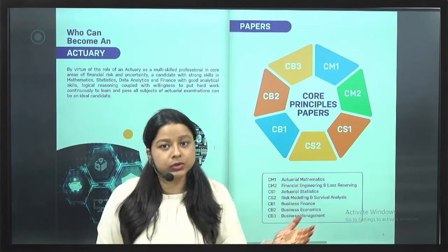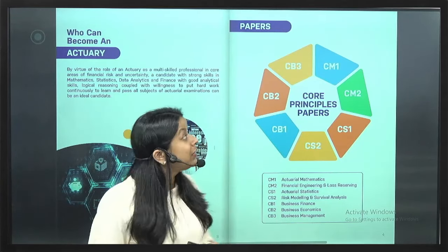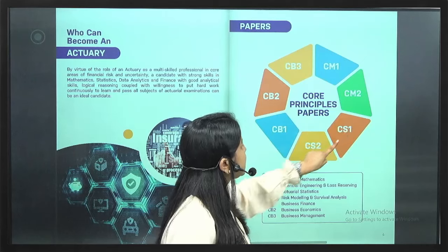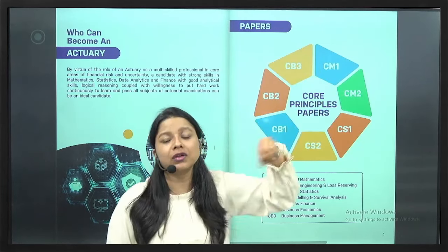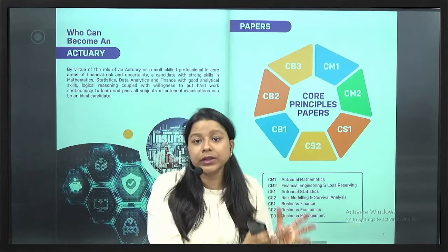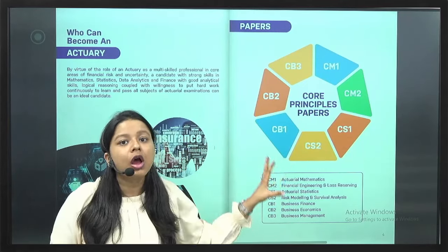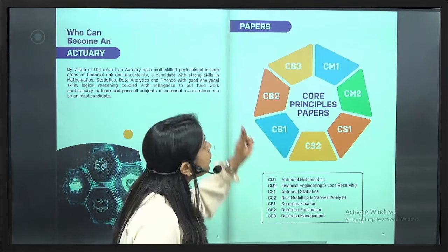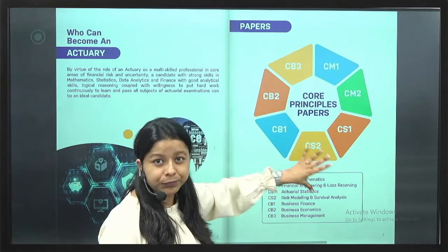Let's talk about the course curriculum. There are 13 papers divided into 4 levels. The first level — Core Principle papers — has 7 papers: CM1, CM2, CS1, CS2, CB1, CB2, and CB3. CM1 is Financial Mathematics, which involves Excel. CM2 is more related to the stock market — evaluating companies and performing fundamental and technical analysis. CS1 is basic statistics involving basic probabilities and statistical tools. CS2 is a higher statistical paper dealing more with general insurance and modelling — including machine learning and valuing extreme events.